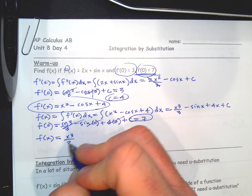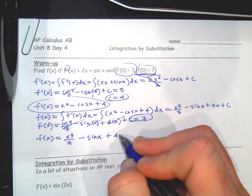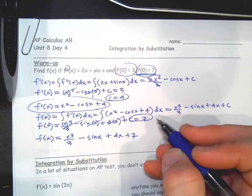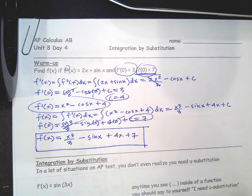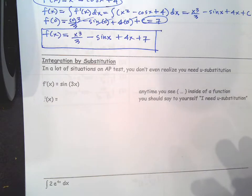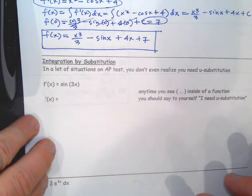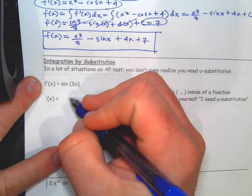Use the initial condition for the original function — put 0 in everywhere, and that should give us 7. All the terms go away, so C equals 7. The original function, your final answer, is x³/3 minus sine x plus 4x plus 7. That's the final answer. Find the C's along the way whenever you're given initial conditions.